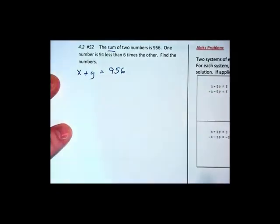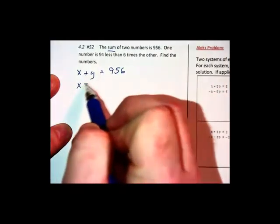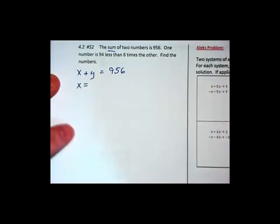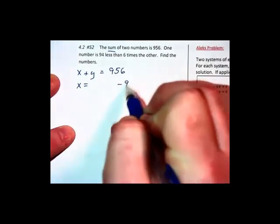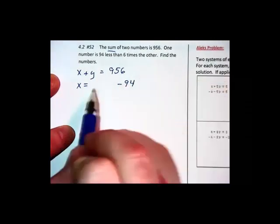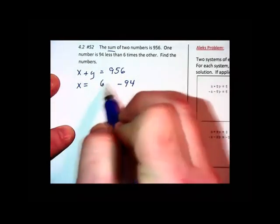One number is, oh, one of them, let's just call it x. x is, and is becomes the equal sign, 94 less than. Now there's that word less we've got to be careful of. I'm taking 94 away from something else which goes first, and that's 6 times the other number, so that will be the 6y.